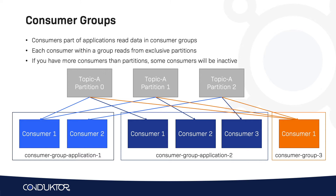Consumers share the reading of partition data within a consumer group, but for two differently-named consumer groups the topic data will be read multiple times. A consumer group will consume the data of a topic partition once, but a topic partition can be consumed by many different consumer groups at the same time — which is normal for a pub-sub system.